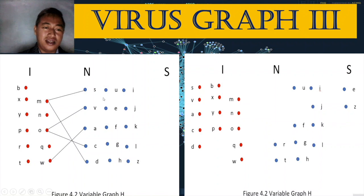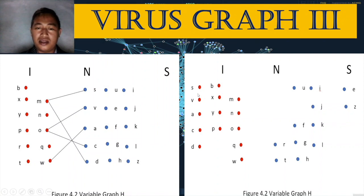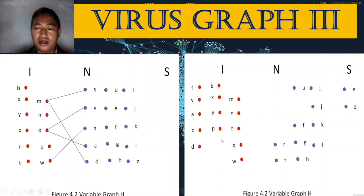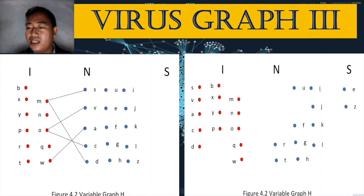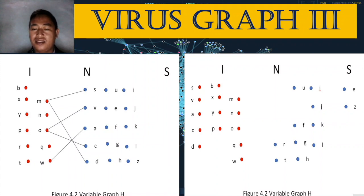S, v, a, c, and d are transferred to set I — you can see them on the left side of set I. Some vertices transferred from I to N: those are r and t. Also, vertices from N transferred to set S: those are e and z. That is the new phase of virus graph three.